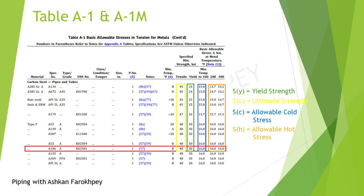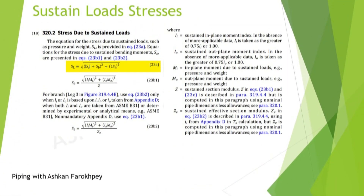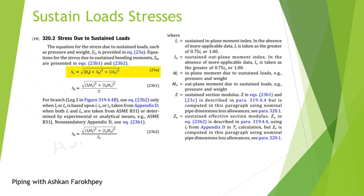Your next question is probably about the method of calculating the imposed stress in a system — how the software quantifies the value of our system's stress. This is the key point of this video. Remember the loads mentioned at the beginning: sustained loads, secondary or displacement driven loads, and occasional loads. ASME B31.3 defines a formula for the calculation of stresses due to sustained loads in a system. This formula is SL and can be found in section 320.2 of the ASME code.